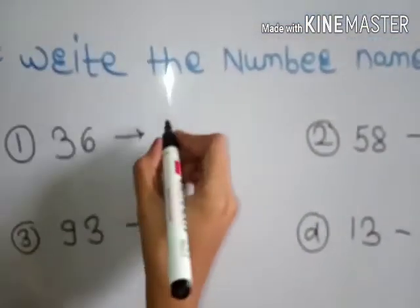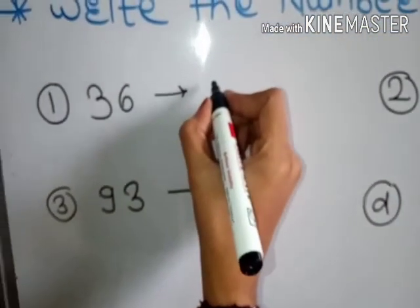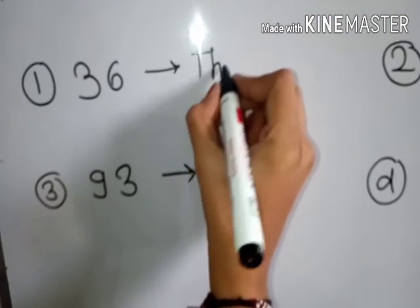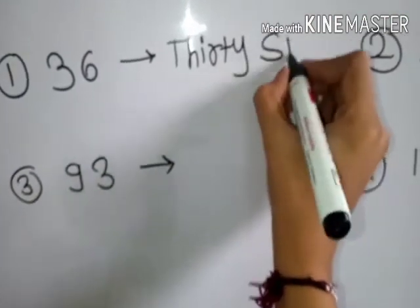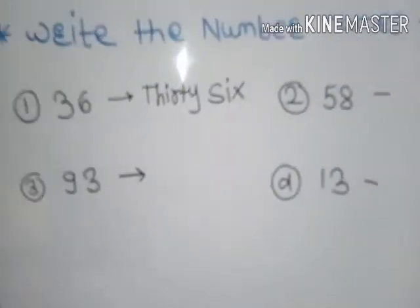So 36 we have to write the number. 30 is T-H-I-R-T-Y, thirty. 36 is thirty-six.